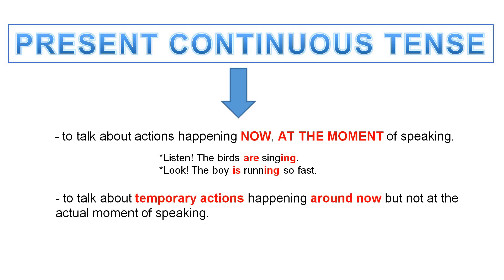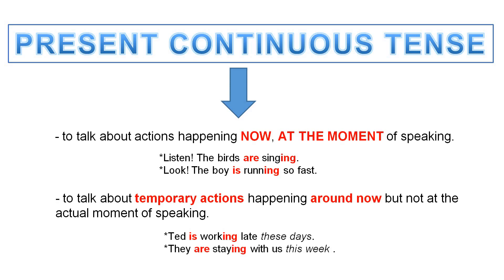Also, we use the present continuous tense to talk about temporary actions happening around now, but not at the actual moment of speaking. For example, 'That is working late these days' — it doesn't mean it is happening right now, it just means it is happening around now. 'They are staying with us this week' also shows something happening around now, but not at the actual moment of speaking.